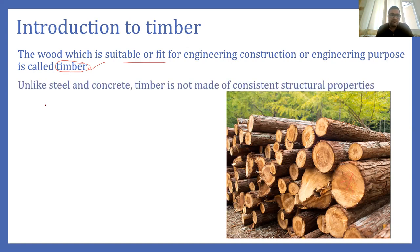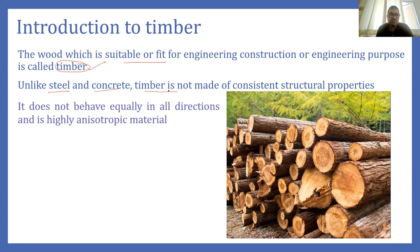Nowadays we use various other construction materials like steel and concrete, which are of superior quality when compared with timber. But still we use timber as a construction material. Unlike steel and concrete, timber does not have consistent structural properties and therefore timber is a highly anisotropic material, which means it does not behave equally in all directions.